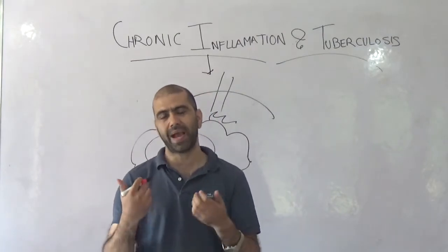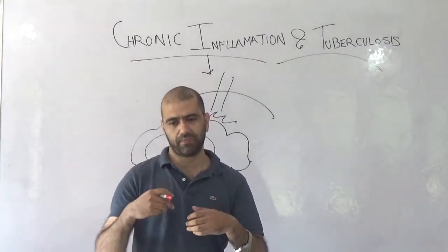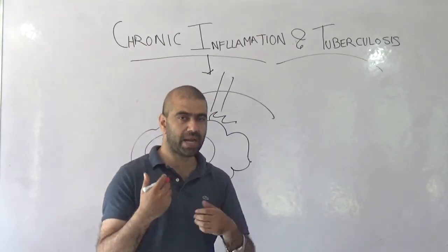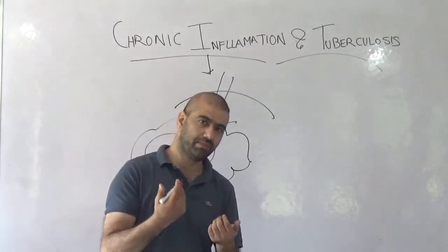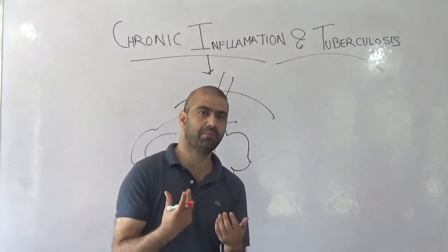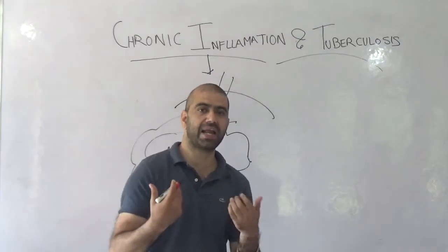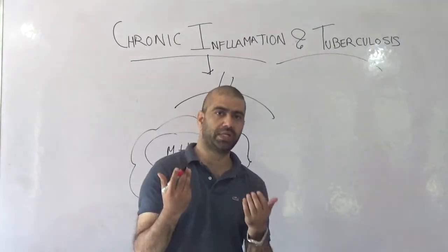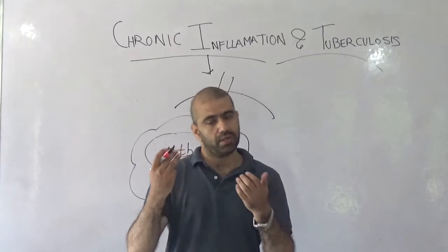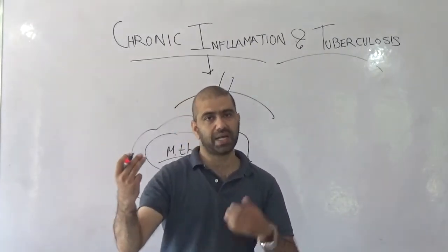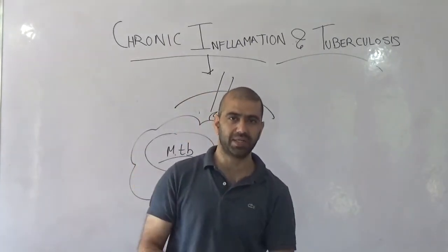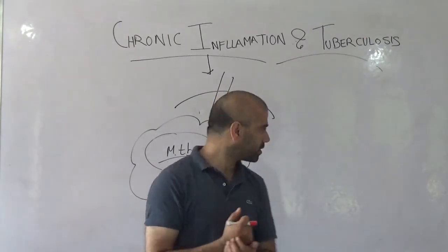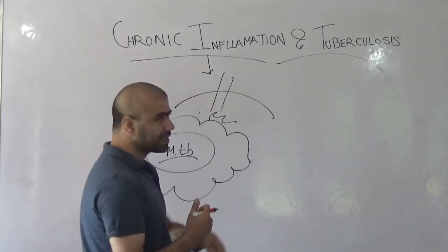This bug is special. Mycobacterium tuberculosis is a special bug — the word 'myco' comes from the word for fungi, and 'bacterium' means bacteria. So Mycobacterium is like a fungi-like bacteria, meaning it has the pathogenesis of fungi on one side and the pathogenesis of bacteria on the other, which makes it a special microorganism.